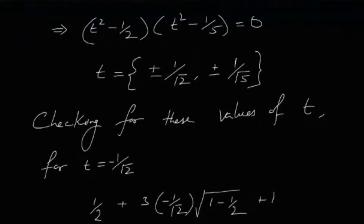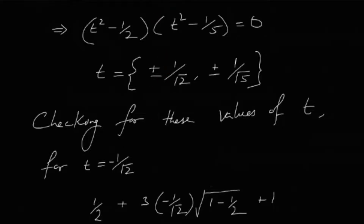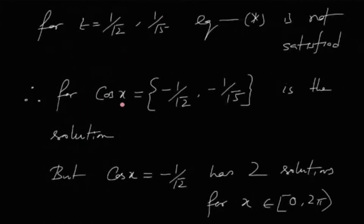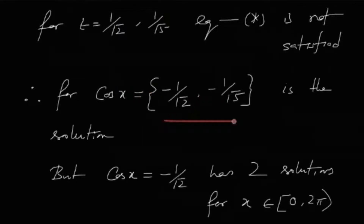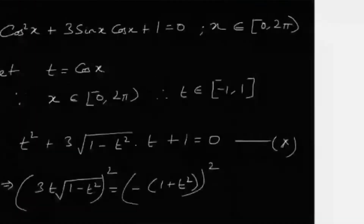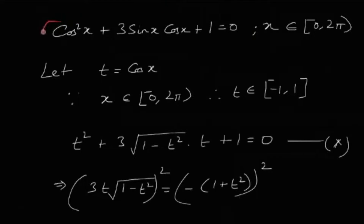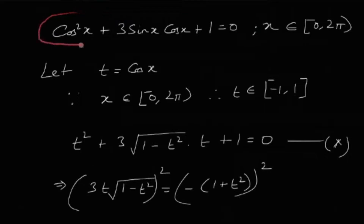So we only have two actual solutions for t: t = -1/√2 and t = -1/√5. That's why I said we can't immediately rush to the conclusion that there are four solutions. Now, since t = cos x, the original equation reduces to cos x = -1/√2 and cos x = -1/√5.